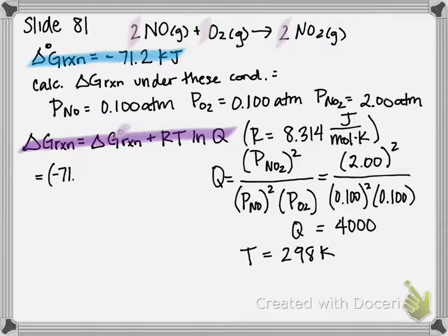Negative 71.2—and we're actually going to change this to joules because my gas constant is in units of joules—so it's going to be negative 71,200 joules, plus, and I might need to spread out.